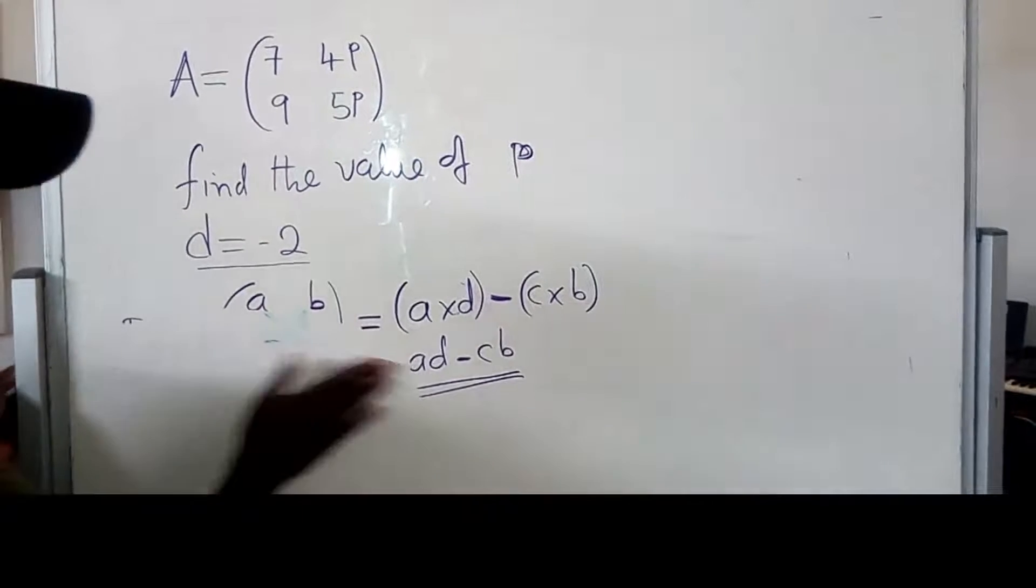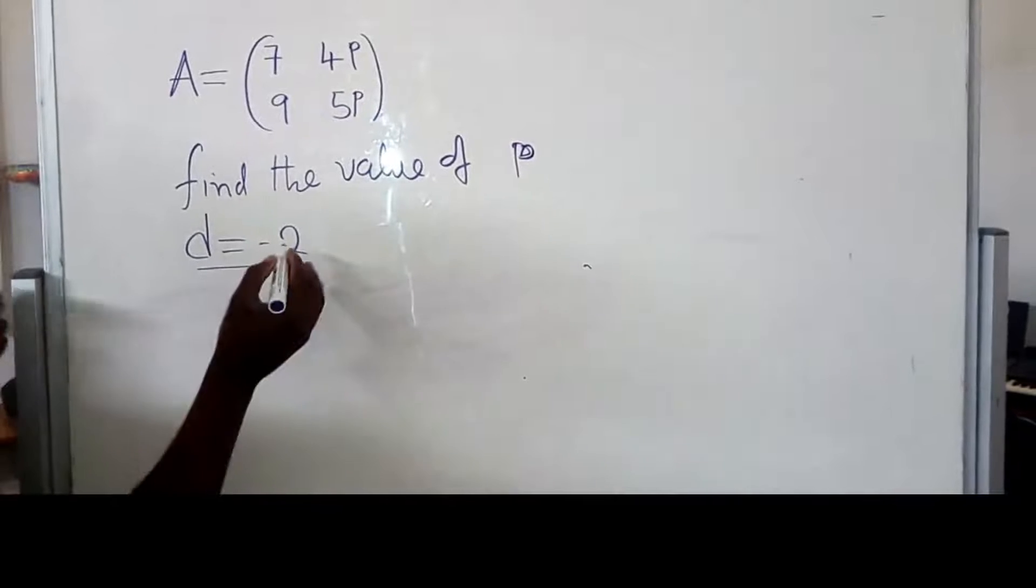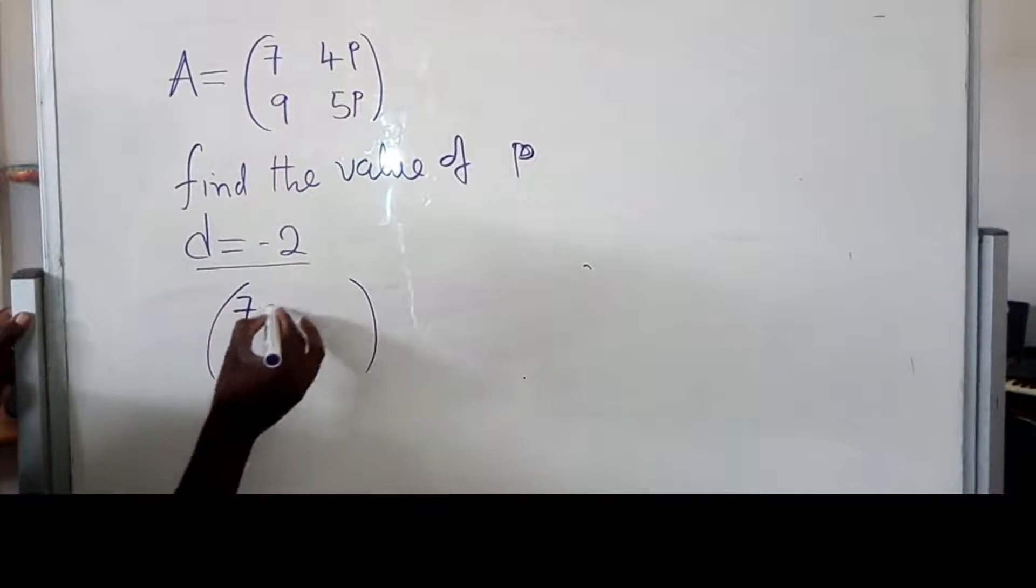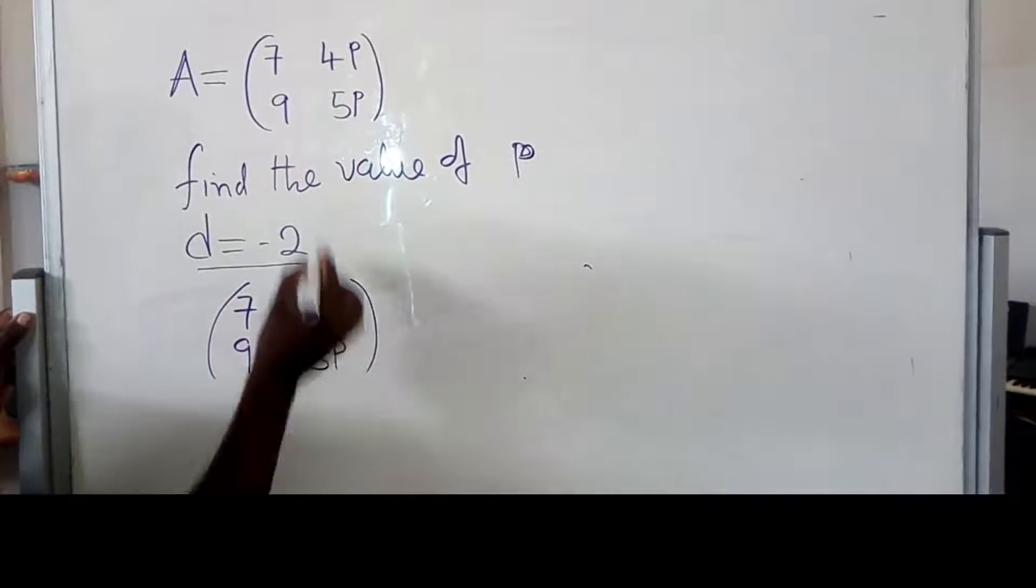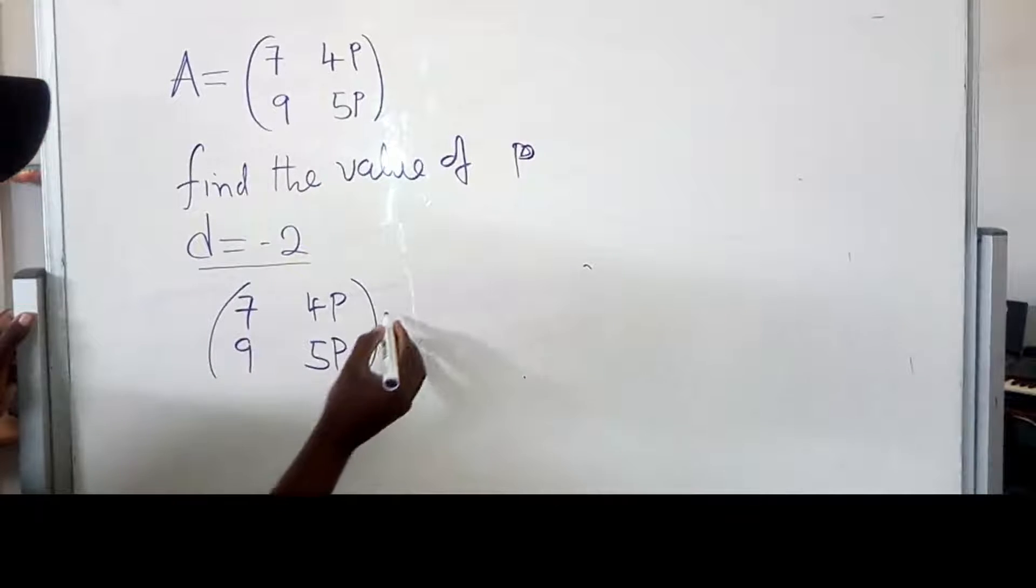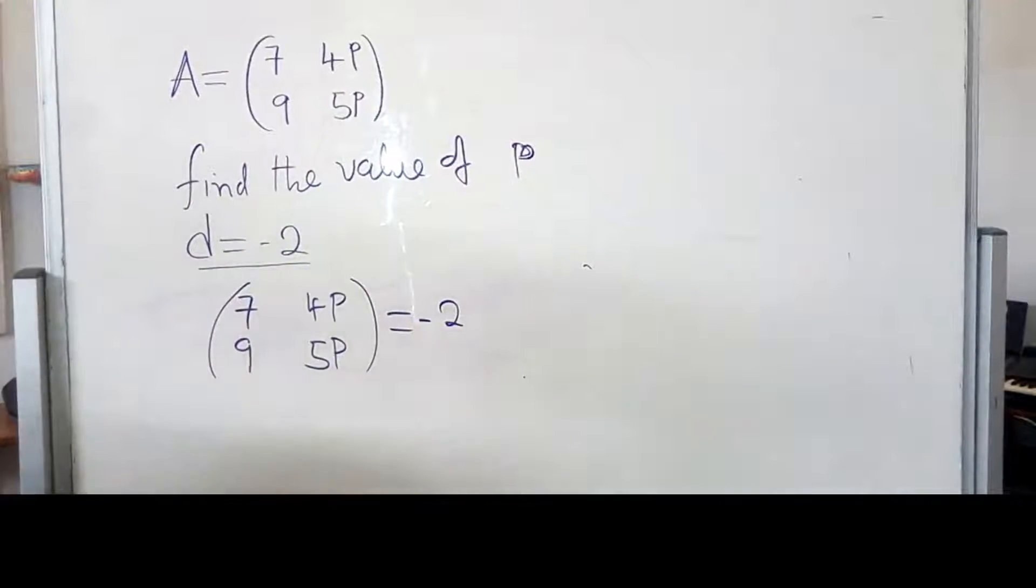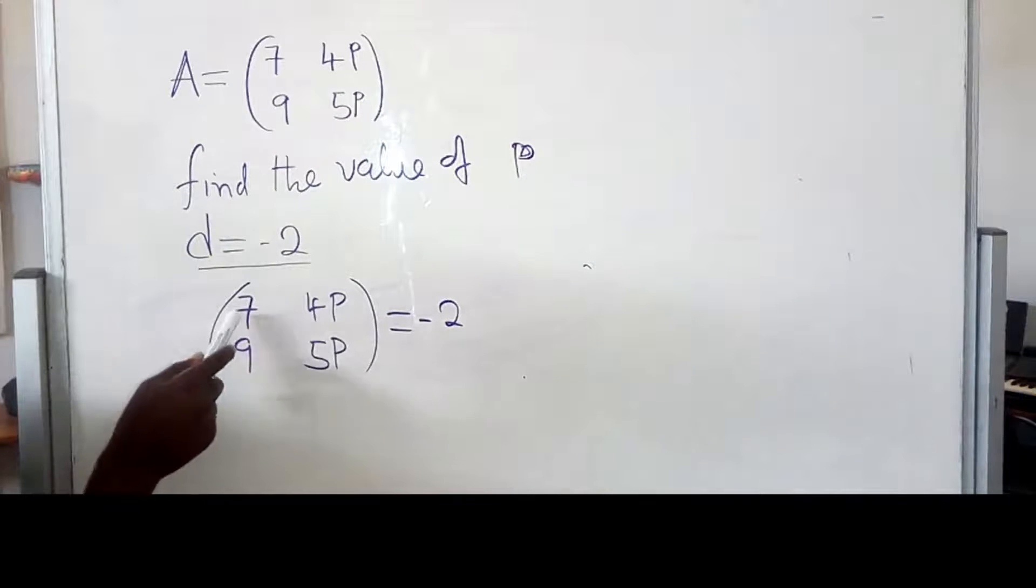So, how will it look like? Since they have already given us the answer, it's more like this: 7, 4P, 9, 5P, which is the matrix over here. And they have said the determinant of this matrix is equal to negative 2.